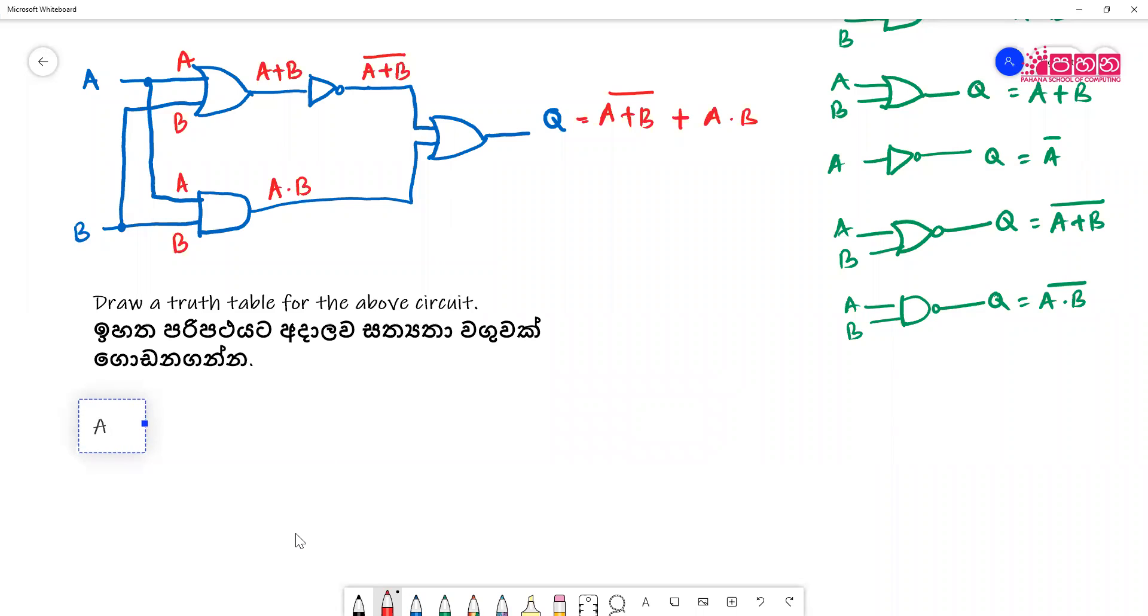This is A, then we will have B, then we will have A plus B, then we will have A plus B bar.